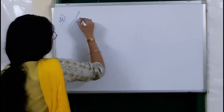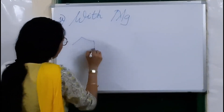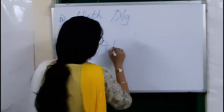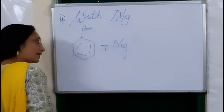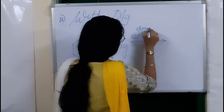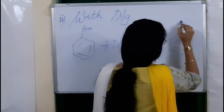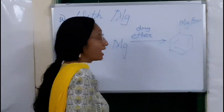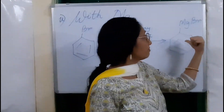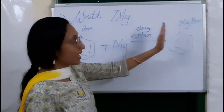Our next reaction is the reaction of aryl halides with magnesium. Bromobenzene, when treated with magnesium metal in the presence of dry ether, we will get phenyl magnesium bromide. Here we have a carbon-metal bond — an organometallic compound involving magnesium. This is nothing but a Grignard reagent, phenyl magnesium bromide.